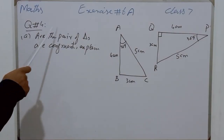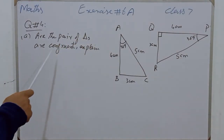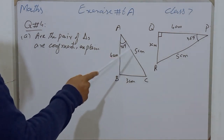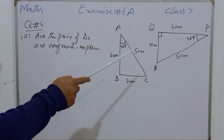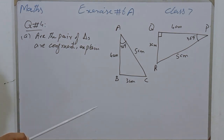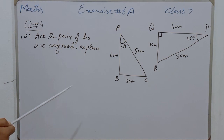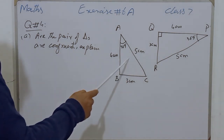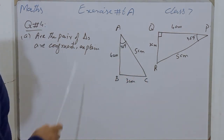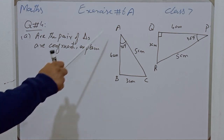Students, question number 4 of the same exercise: we have to find either the pair of triangles are congruent or not, and if they are congruent we have to explain the reason, and if they are not congruent we again have to explain why. Two figures will be congruent if their corresponding angles and corresponding sides are congruent.